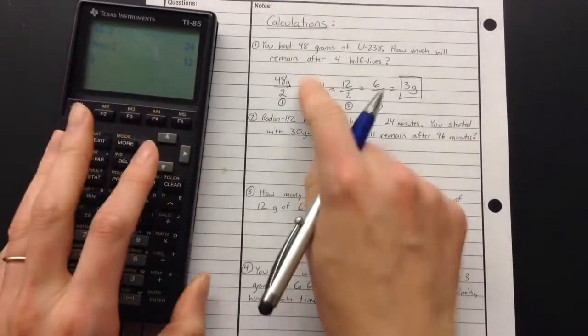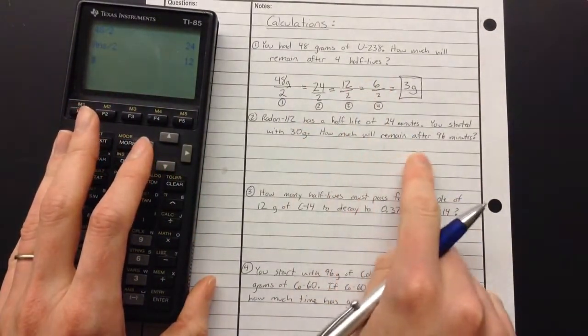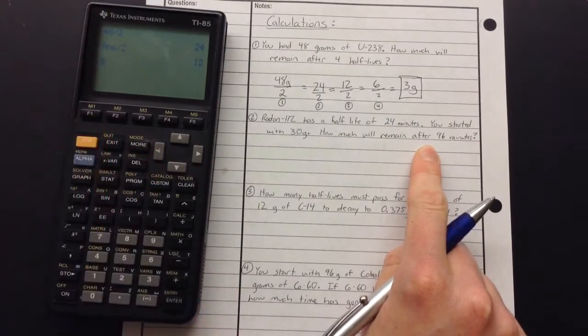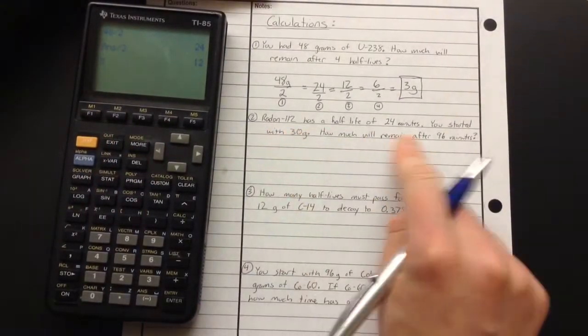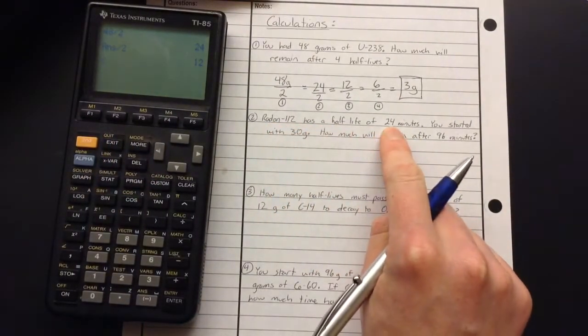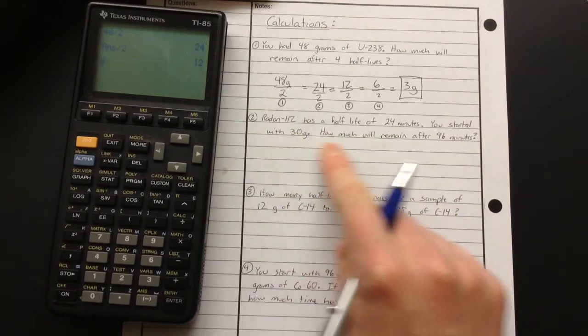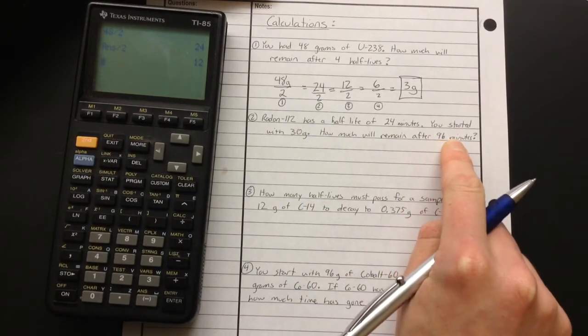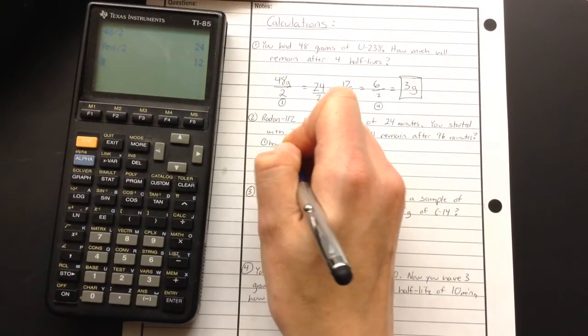Now, let's say it doesn't say that specifically for half-lives. Maybe you have some amount of time that goes by. Well, you're going to do the same thing, okay? So radon-112 has a half-life of 24 minutes. You had 30 grams. How much will you have after 96 minutes? So the question, the first question you have to answer is how many half-lives.